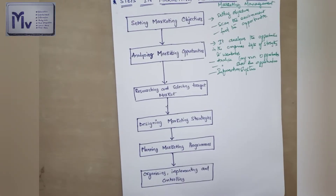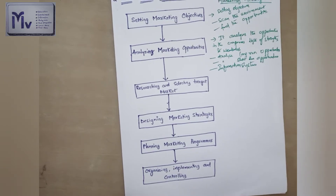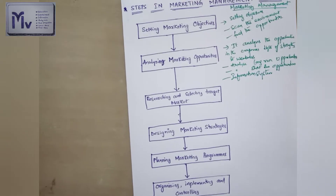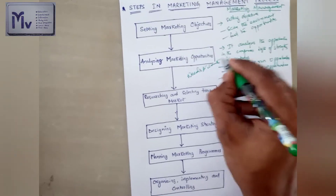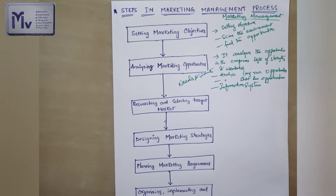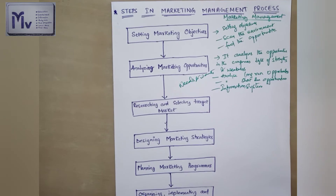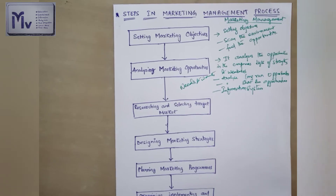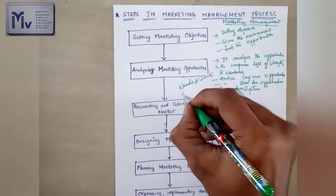To identify and evaluate its opportunities, there is a requirement of a reliable information system. This information system helps the companies to know the needs and wants of their customers. In summary, analyzing marketing opportunities involves assessing strengths and weaknesses, analyzing both long-run and short-run opportunities, and using information systems to understand customer needs and wants.